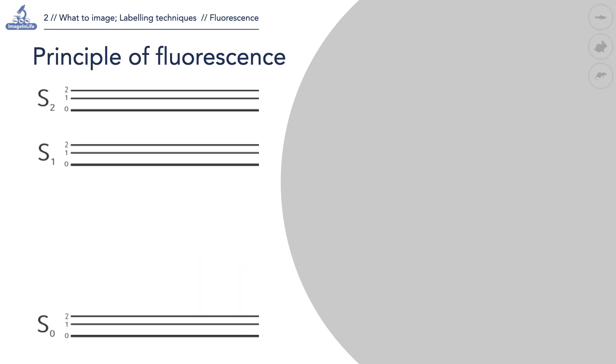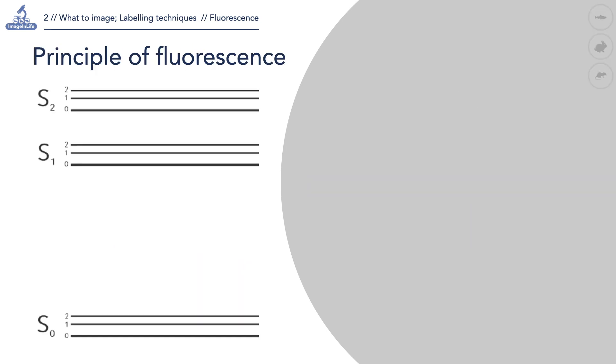The principle of fluorescence is depicted on this diagram named after Professor Alexander Jablonski. The electron on its lowest energy state absorbs a photon of a specific amount of energy. The electron is brought to a higher level of energy, called its excited state.